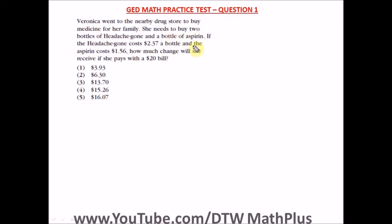We know that the cost of one bottle of headache gun is $2.37, so let's note the cost of two. We have 2.37, that's $2.37, times 2. If we multiply this, punch in your calculator, you should get $4.74.